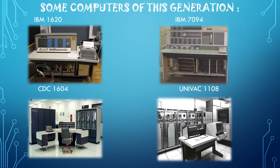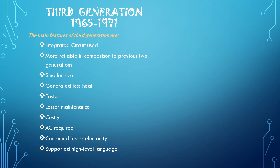The third generation computers ran from 1965 to 1971. They used integrated circuits instead of transistors. A single integrated circuit had many transistors, resistors, and capacitors. The integrated circuit was invented by Jack Kilby. This development made computers smaller in size, more reliable, and more effective.